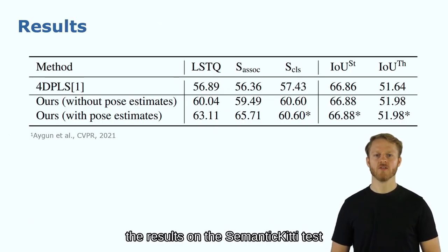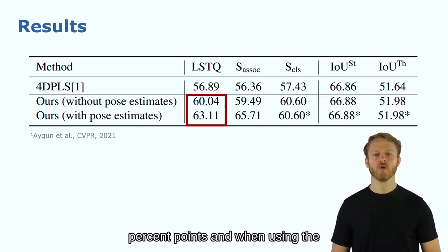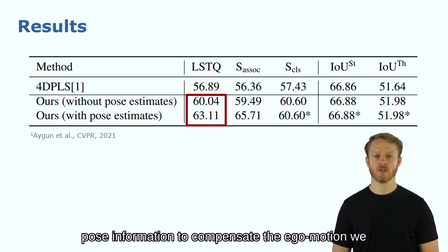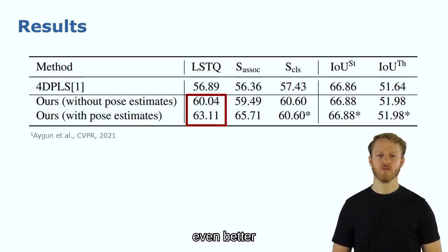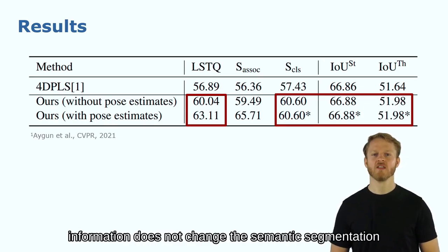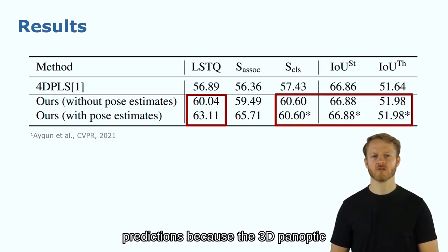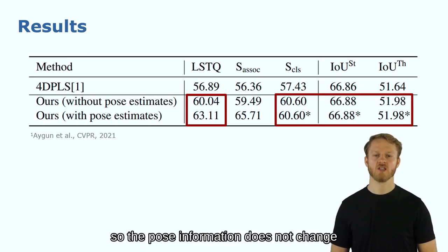These are the results on the SemanticKITTI test set. What we can see is that we outperformed previous approaches by around 3% points and when using the pose information to compose scan to ego motion, we also get another 3% points even better. It's important to note that the pose information does not change the semantic segmentation prediction because the 3D panoptic backbone is a single scan one. So the pose information does not change this.